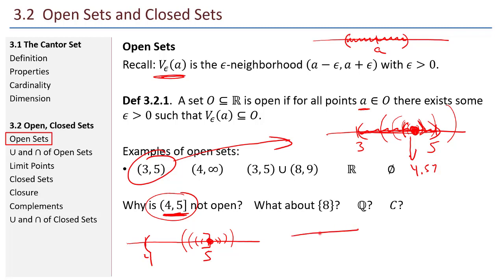With the set {8}, a single point is the entire set. As I make my epsilon neighborhoods smaller and smaller, it'll never be the case that the entire epsilon neighborhood is contained within the set {8}. So the set {8} is not open. You can convince yourself that the set of rational numbers is not open. And the Cantor set? That's a little bit of a mystery — I'll give you the answer a little bit later.